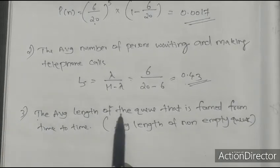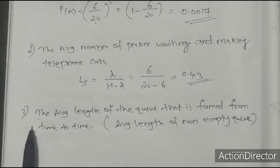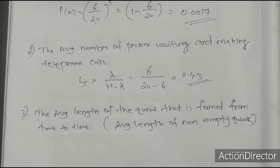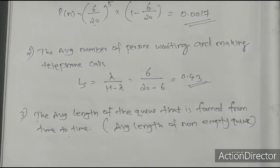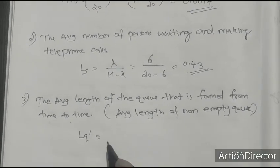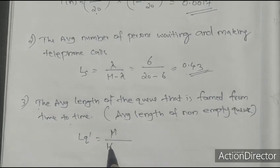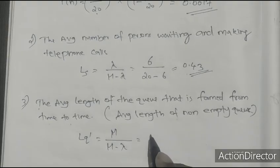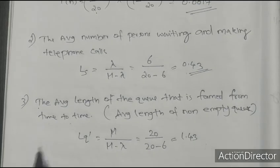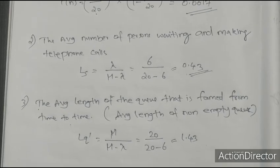Third question: the average length of the queue that is formed from time to time — that is, the average length of the non-empty queue, Lq dash. Calculate Lq dash: Lq dash equals mu divided by (mu minus lambda), which equals 20 divided by (20 minus 6), giving 1.43. So 1.43 customers is the average length of the non-empty queue.